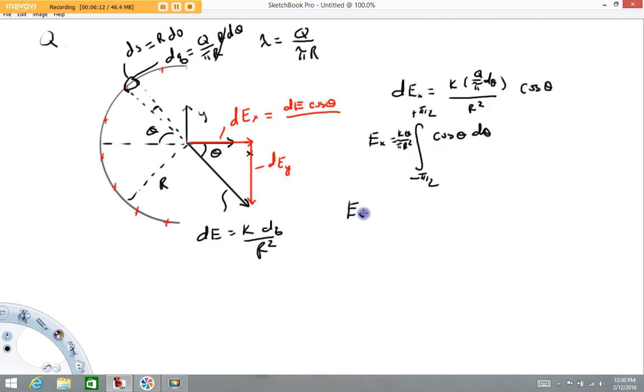The x component of the electric field equals KQ over pi R squared. The integral of cosine theta D theta is sine theta, evaluated from minus pi over 2 to plus pi over 2. KQ over pi R squared times sine of pi over 2, that's 1, minus the sine of minus pi over 2, which is minus 1, making that a plus 1. We end up with 2 KQ over pi R squared.